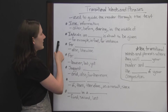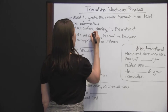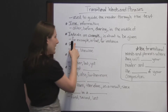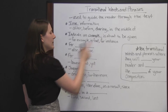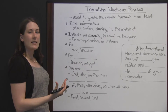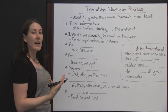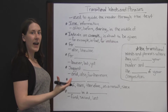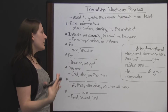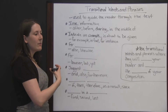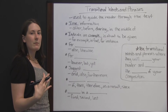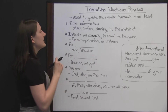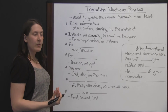You can also have transitions that indicate an example is about to be given — for example, in fact, for instance. If you state your main idea and then want to give a supporting example, you can say 'in fact, let me tell you this thing.' For example, dogs make good pets because they are very loyal. These phrases let you know that an example is coming.